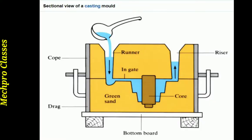Here you can see the cross-sectional view of a molding cavity where the molten metal is being poured by the help of a ladle. From there it passes to the runner, then it goes to the ingate, and it gradually fills up the molding cavity. Here you will find the core as well. After filling the molding cavity, the molten metal rises up in the riser as well.